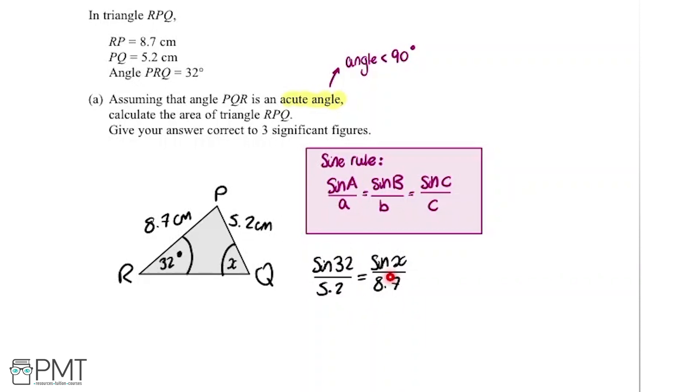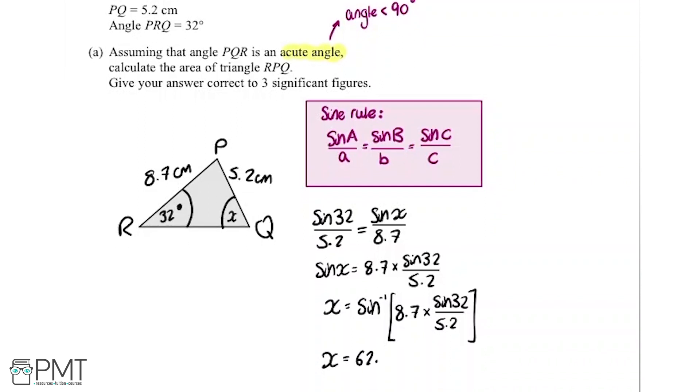Now we've got an equation that we can solve. If I multiply both sides by 8.7, we'll get sine X by itself. So 8.7 multiplied by sine 32 over 5.2. To get X by itself, we need to do inverse sine of all of this. If we put all of that into the calculator, we get 62.44853188 degrees.